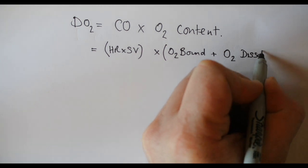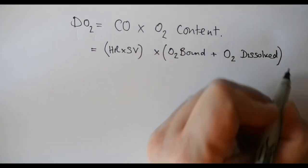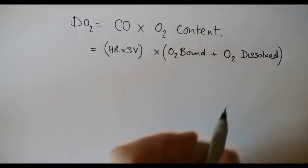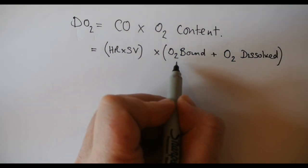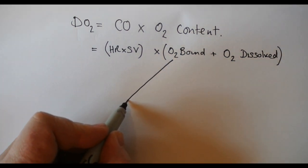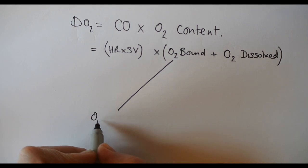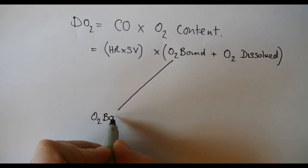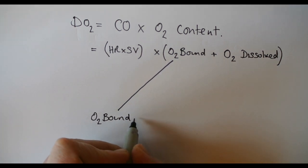The oxygen content of the blood is made up of oxygen that's bound and the oxygen that is dissolved. The cardiac output is your standard heart rate times by stroke volume.